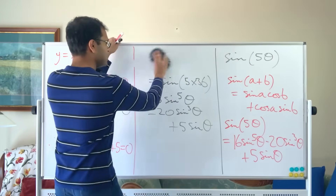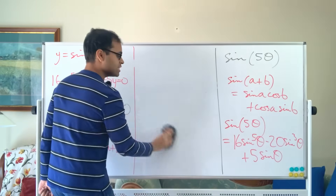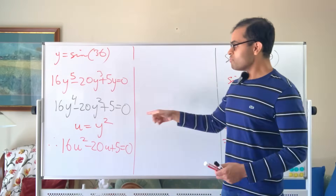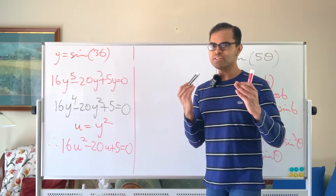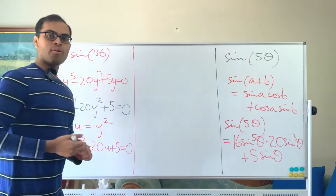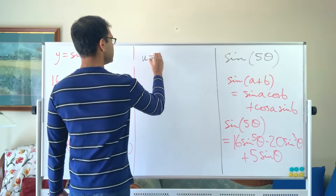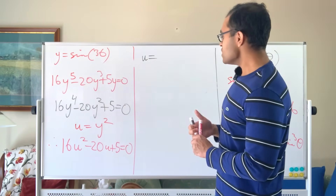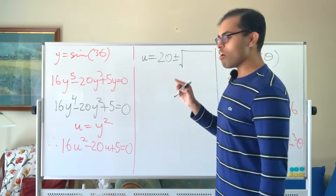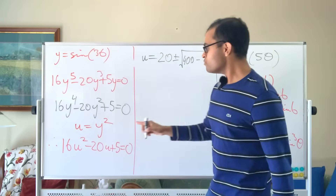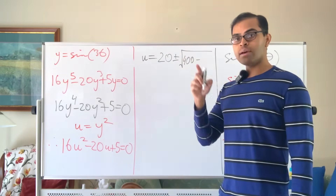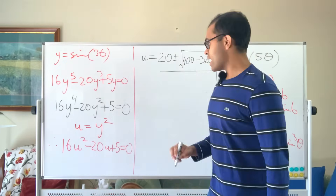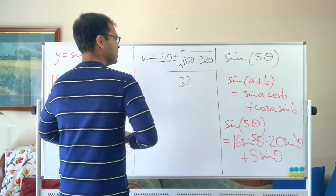This is so fun — it was crucial that sine of 180 was 0, otherwise there'd have been a constant term in the fifth degree equation. Using the quadratic formula: u = (−(−20) ± √(20² − 4×16×5)) / (2×16). That's (20 ± √(400 − 320)) / 32, which is (20 ± √80) / 32.